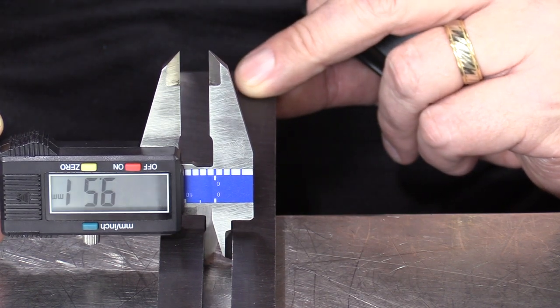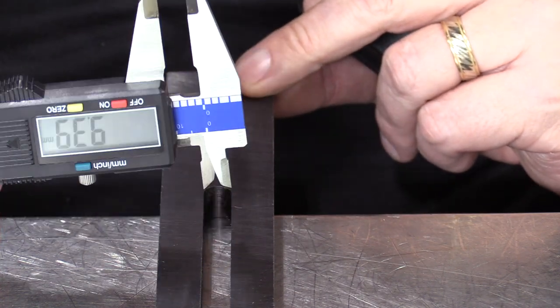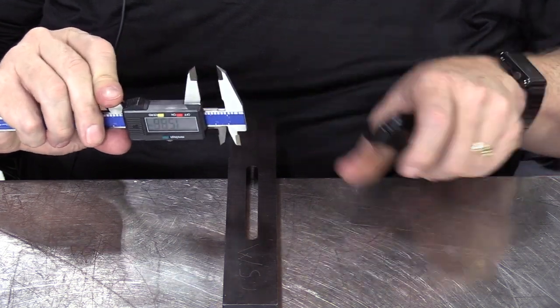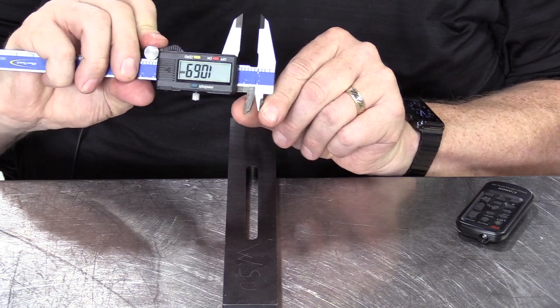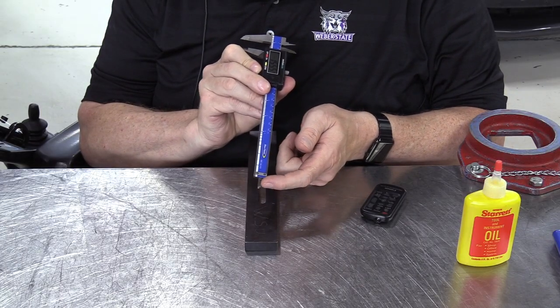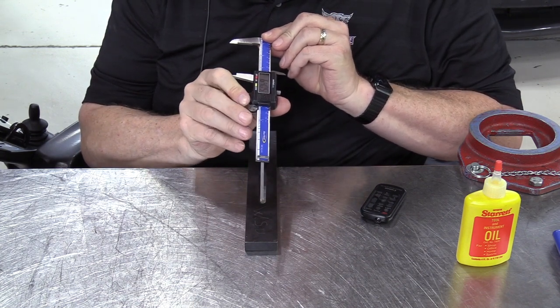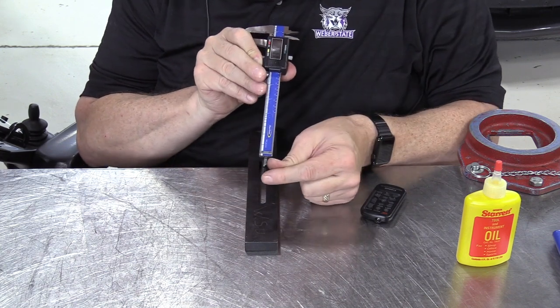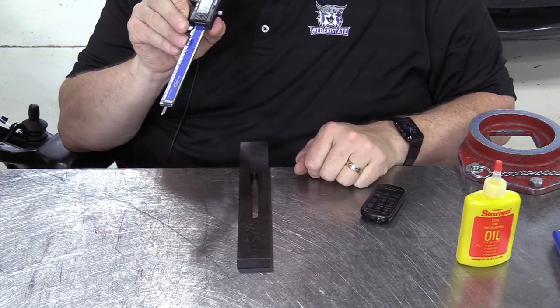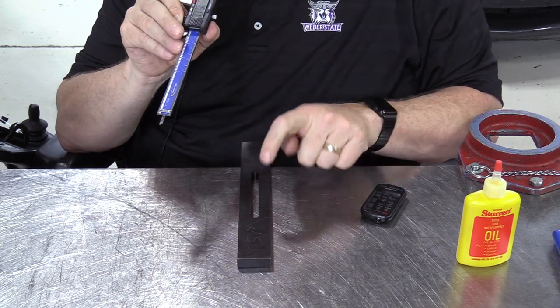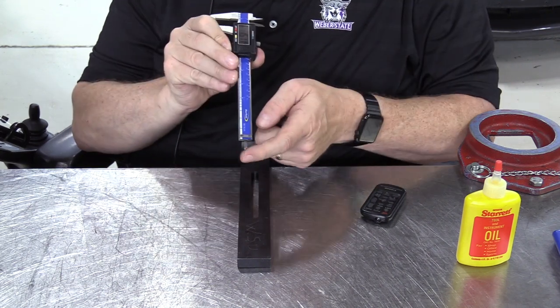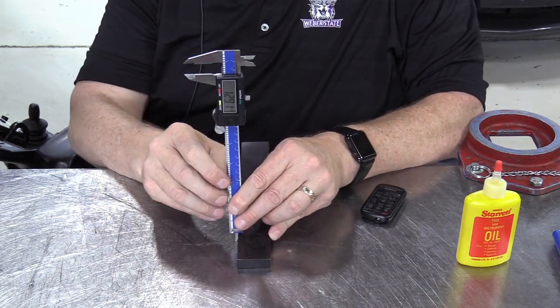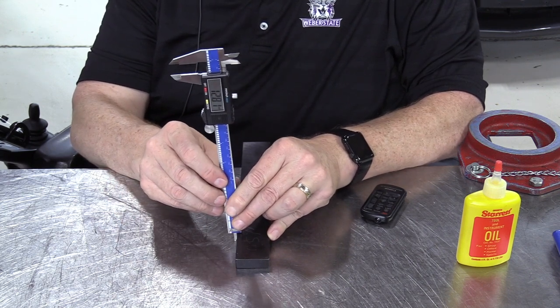On the other end of the caliper we've got this extension here. As we move the base back and forth, that extension sticks out and we can use that to measure depth. Let's say this bar that I have here was solidly attached to this workbench and I wanted to see how high it sticks up above the workbench. We can use this extending rod to measure that height. But the problem is if you tilt the digital caliper forward, backwards, side to side, your measurements can be incorrect.